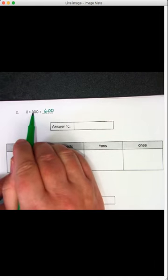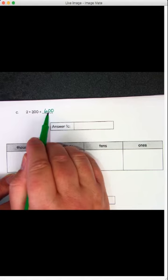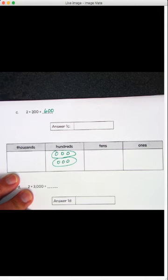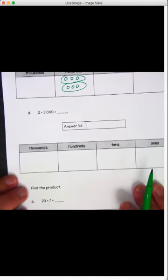2 times 3 is 6. How many zeros do we add? 1, 2. 600.